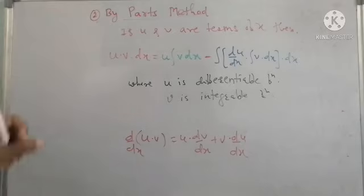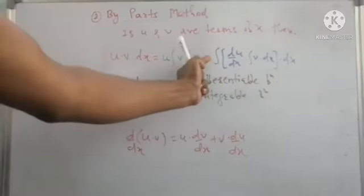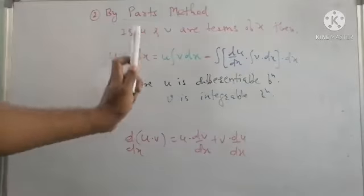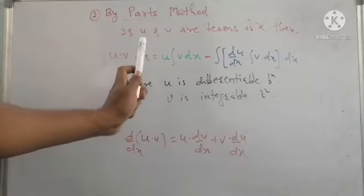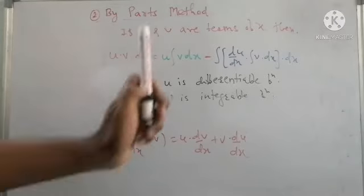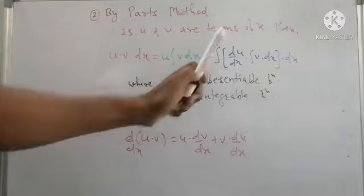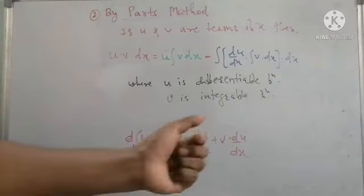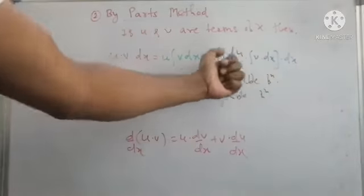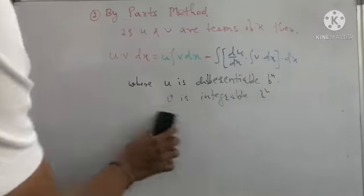So the by parts method gives the integral of the product of u and v in two parts, and these two parts are subtracted. In the first part, the first function is kept constant outside the integration, and the integration of the second function is taken. In the second part, we take the product of the derivative of the first function and the integration of the second function, and this product is again integrated. The first function u must be differentiable and the second function v must be integrable.